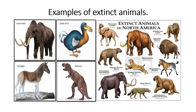On this slide, we can see some examples of extinct animals. They existed, but they are not on the earth anymore: the dinosaur, the mammoth, the dodo bird, the quagga, and dinosaurs.